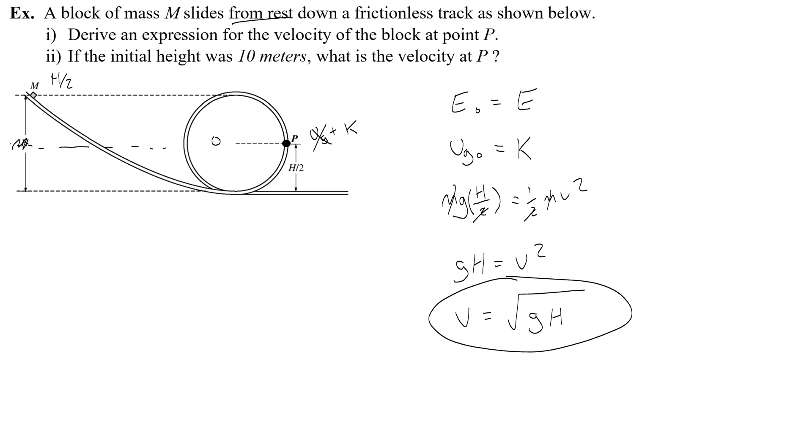If the initial height was 10 meters, then you would find the velocity by doing the square root of 10 times 10. Wow, I picked good numbers for this. That of course is going to give you 10 meters per second. Congratulations, you're so smart. You did it.